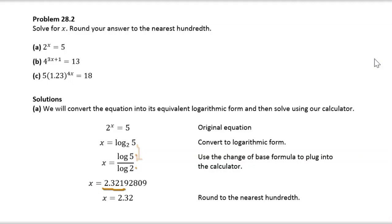So x equals 2.32192809. We are asked to round it to the nearest hundredth, so we will say 2.32.